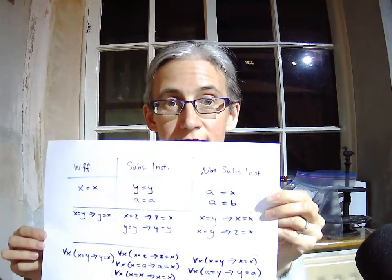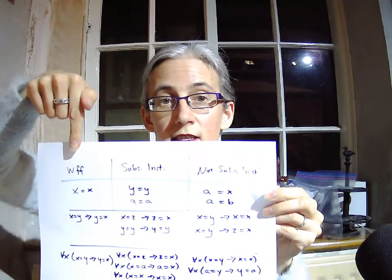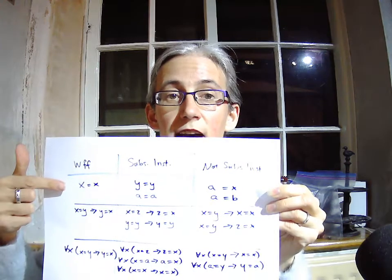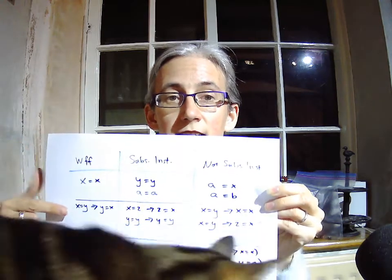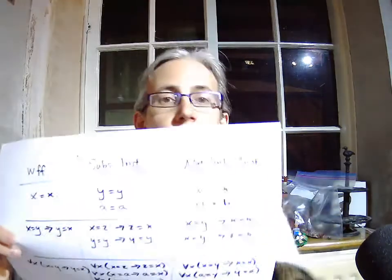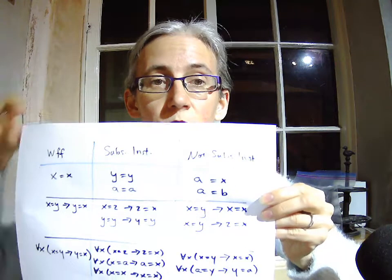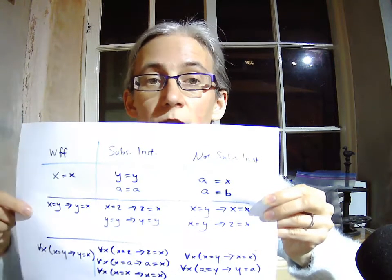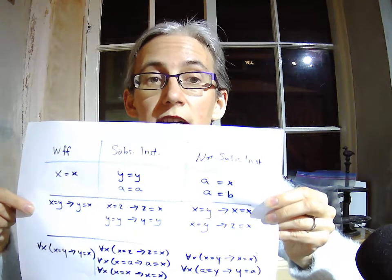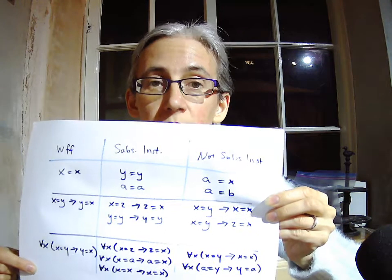Here's a handy dandy table. We have well-formed formulas in this column. We've got x equals y, x equals x, x equals y implies y equals x, and for all x: x equals y implies y equals x.